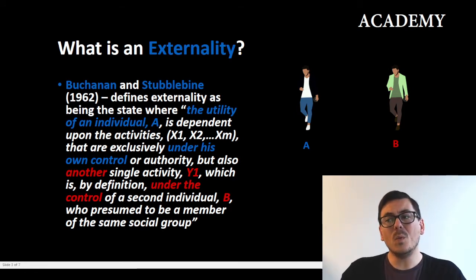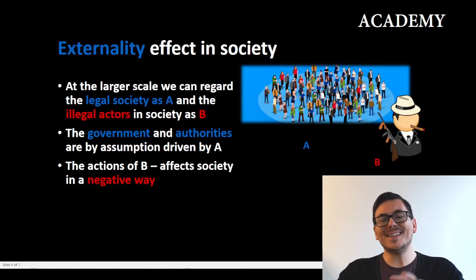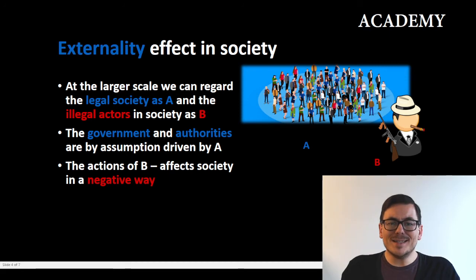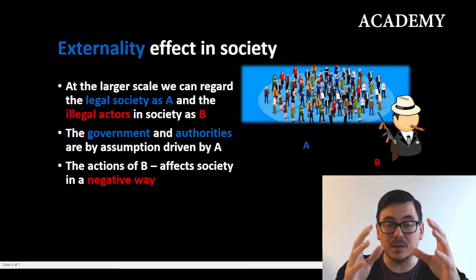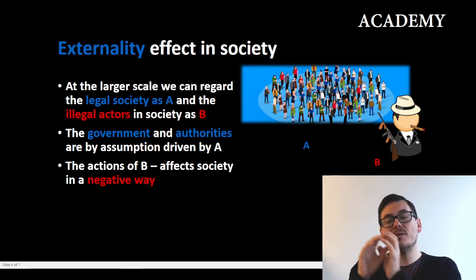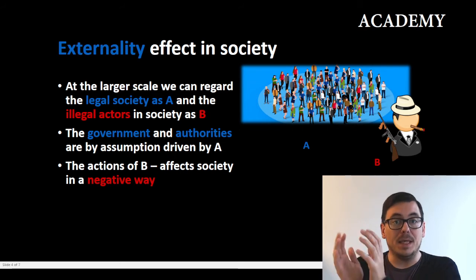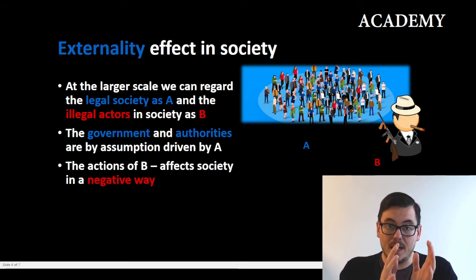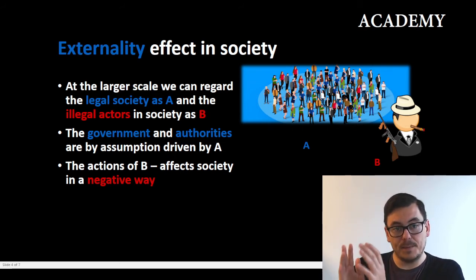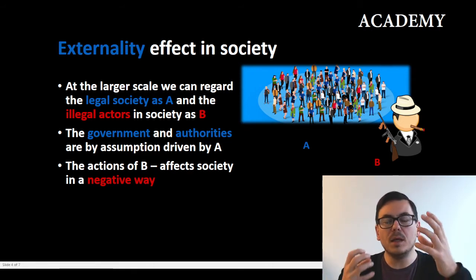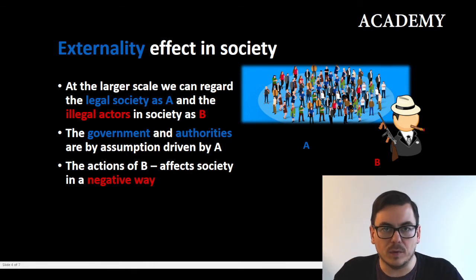So why is this relevant in terms of money laundering? If we look at this at a larger scale in society, we can regard society as one individual — the legal society — and we can say that we have all the illegal actors as another individual B. So we have the legal sector A and the illegal sector B, and we can ask: could this be a negative externality problem?